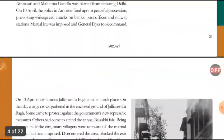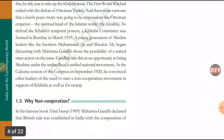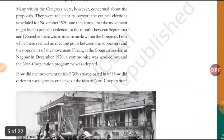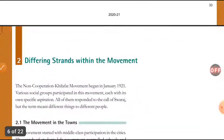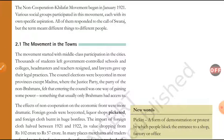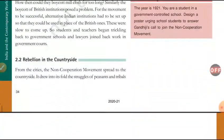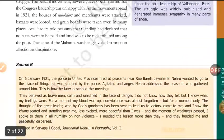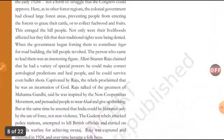We studied the Rowlatt Act, we studied Gandhi's idea of Swaraj, Gandhi ji's Satyagraha, why non-cooperation was needed — all of that we studied. Then Jallianwala Bagh and its significance, after that Khilafat and the Congress cooperation we studied. Then what was a differing strand of this movement in the cities and villages — that too we studied.